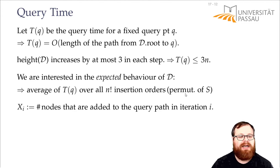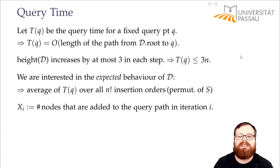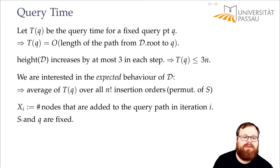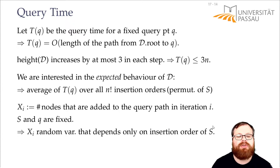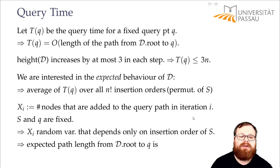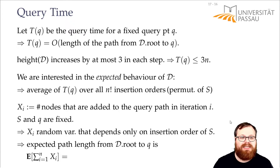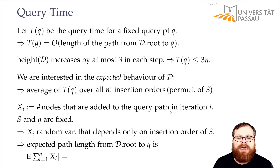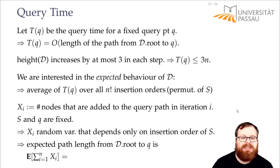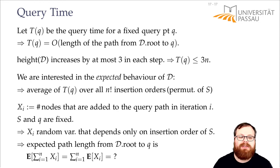We need a random variable. The random variable xi tells us the number of interior nodes that are added to the query path in iteration i. We know that the segment set and the query point are fixed, so this random variable only depends on the insertion order of our segments. We know that xi is at least 0 and at most 3. The expected path length from the root to Q is at most the expected value of the sum of all xi, and by linearity of expectation, we only have to sum up the expected values of xi.